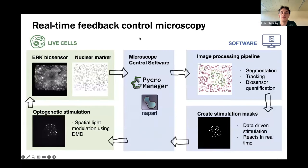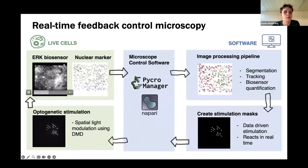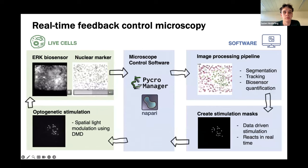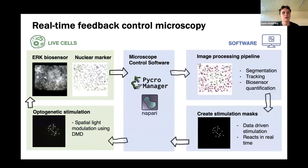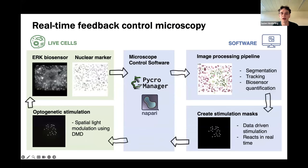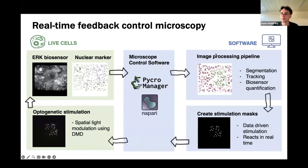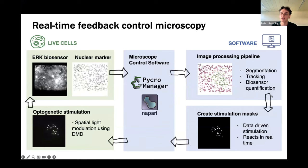Our feedback microscopy pipeline: on the left side, live cells with two biosensors — the ERK biosensor to read pathway activity, and a nuclear marker for tracking. On the right side, the software stack uses Pycromanager and Napari to interface with the hardware, along with our whole image processing pipeline for segmentation, tracking, and biosensor quantification. We then use the extracted data to decide in real time which cells to stimulate. In this experiment, I chose cells in a circular region in the middle of the epithelium, continuously tracked them, and activated only that subpopulation.